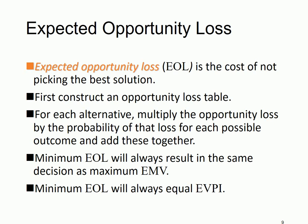Conceptually, instead of finding the alternative that generates the highest profit, we find the one that gives the lowest opportunity cost. To do that, first we build an opportunity loss table, then find the expected opportunity loss for each alternative, and choose the one with the lowest EOL. You will find that maximizing EMV and minimizing EOL yield the same decision, so it doesn't really matter which approach you choose.